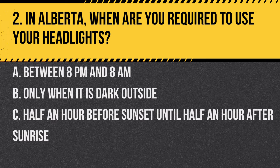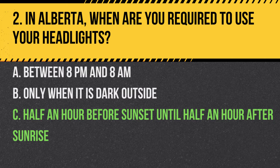Question 2. In Alberta, when are you required to use your headlights? a. Between 8 p.m. and 8 a.m. b. Only when it is dark outside. c. Half an hour before sunset until half an hour after sunrise. Answer: c. Half an hour before sunset until half an hour after sunrise. This ensures your vehicle is visible during times when light conditions are low.